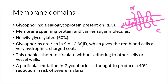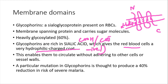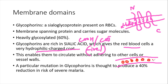Sialic acid has a carboxyl group, which gives the RBC a very hydrophilic, negatively charged coat. Because of this charge, RBCs can circulate without adhering to each other or vessel walls. You can see each cell moving independently. They do not stick to each other. But if they start sticking — something related to cholesterol — cardiovascular disease starts arising.